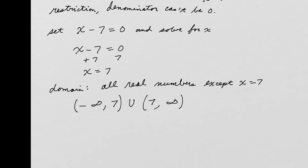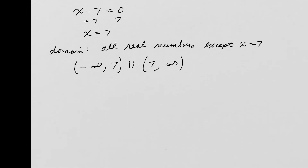By the way, if you wanted to write this in set-builder notation, you could say the domain is the set of all x such that x is not equal to 7. That also tells us all real numbers except x = 7. Although interval notation will be used most in this class.